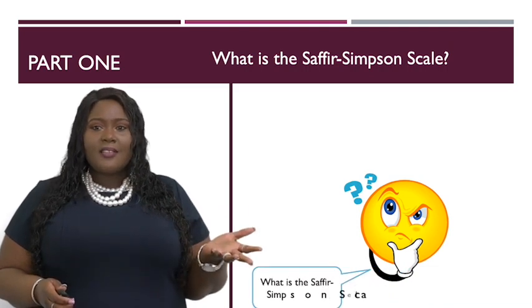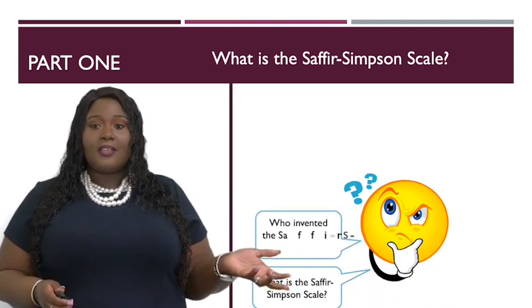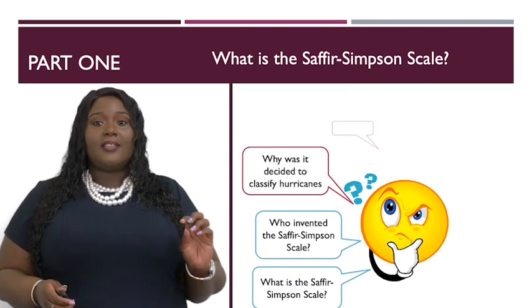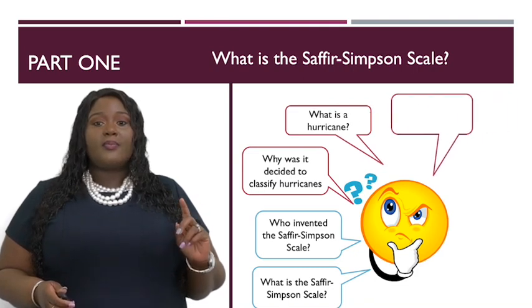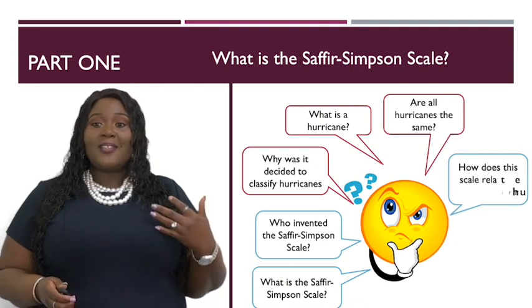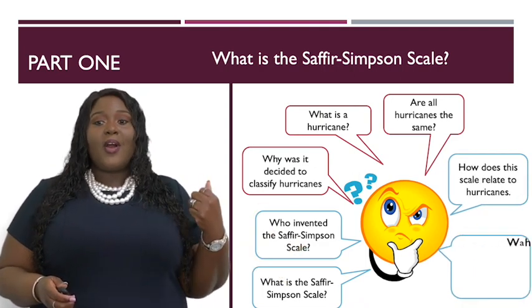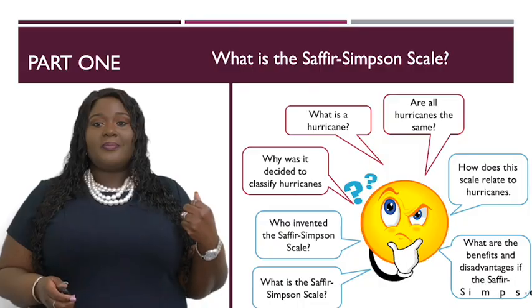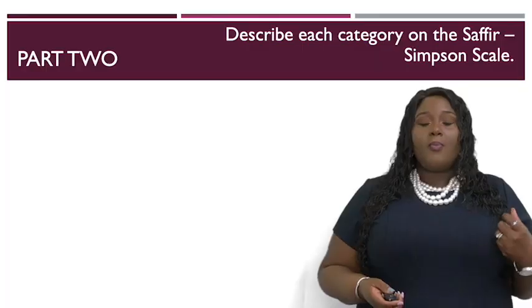For part one, here are the key questions you need to ask yourself: What is the Saffir-Simpson scale? Who invented it? Why was it decided to classify hurricanes? What is a hurricane? Are all hurricanes the same? How does the Saffir-Simpson scale relate to hurricanes? What are its benefits and disadvantages? You must answer all of these questions to get full points for part one.